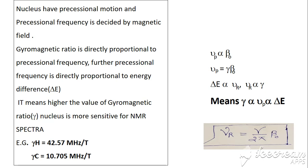The hydrogen proton has a high gyromagnetic ratio, and the gyromagnetic ratio is directly proportional to energy difference — that is, the energy difference between ground level and excited level. A high energy difference means a high frequency. Since the gyromagnetic ratio for hydrogen is higher compared to carbon, proton NMR spectroscopy is very useful.